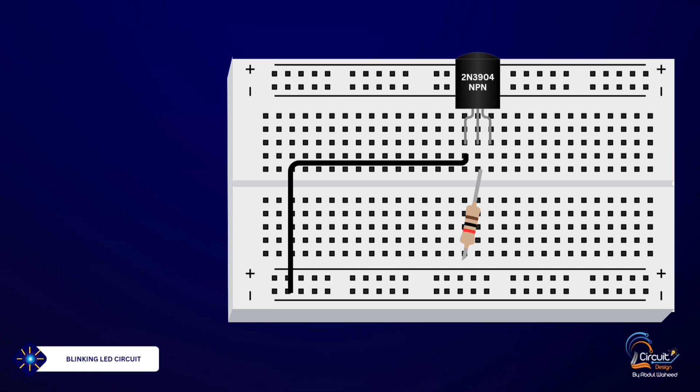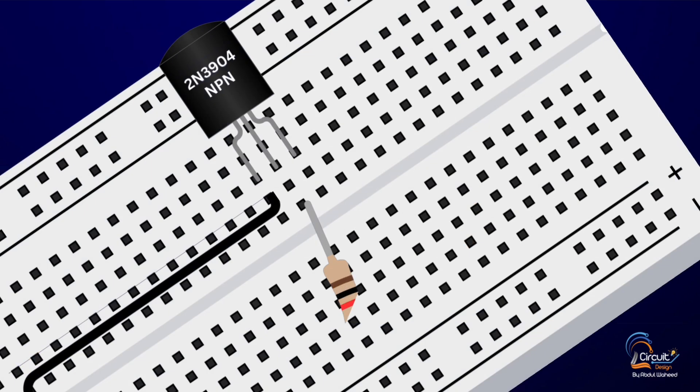Next, connect the 1 kilohm resistor between the base of the transistor and the positive rail of the breadboard.